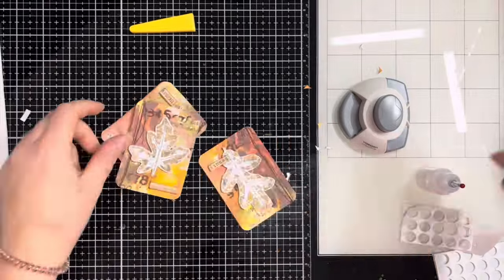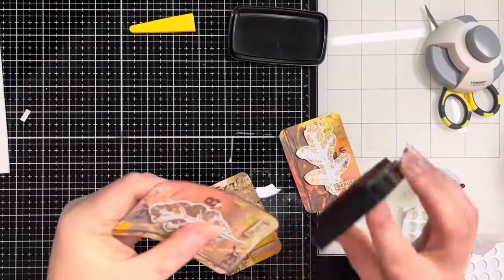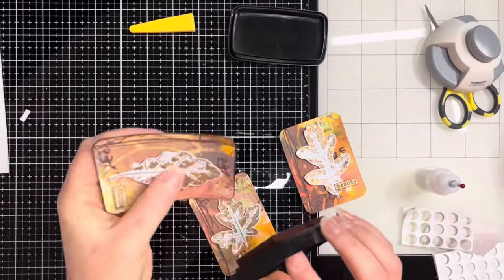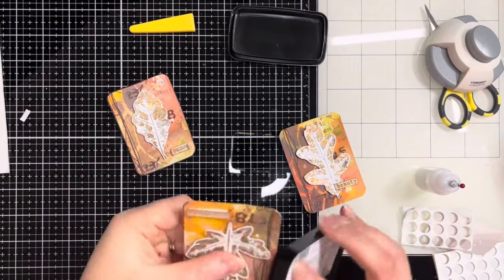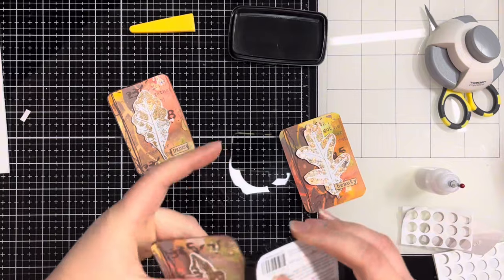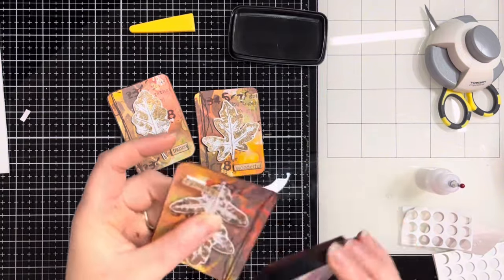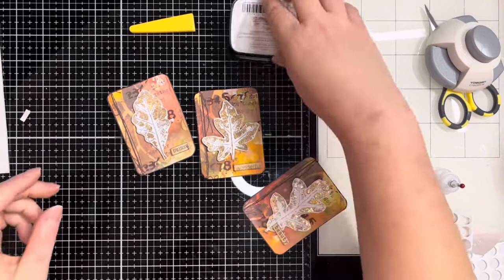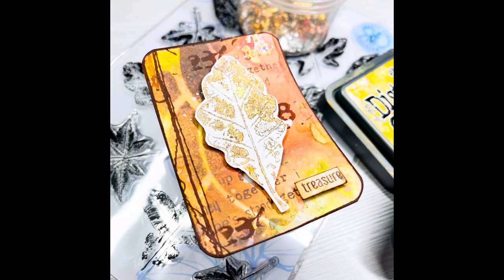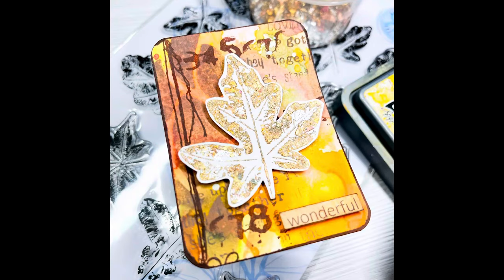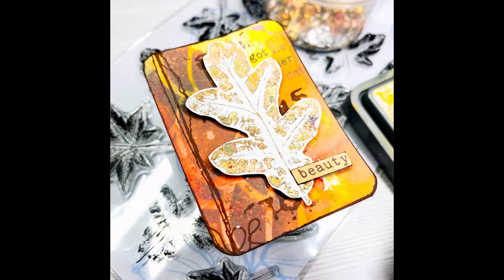Once all the corners are rounded I'm going around the edges of all my ATCs with the Acorn VersaFine Clair ink and my ATCs are finished for today. I'll add close-up photos at the end. Thank you so much for joining me. I hope you've enjoyed this video - a little different to card making but I hope it's given you some inspiration. All of these techniques can be used with your card making as well. Please like and subscribe and leave me a comment. I look forward to seeing you in the next video. Take care!